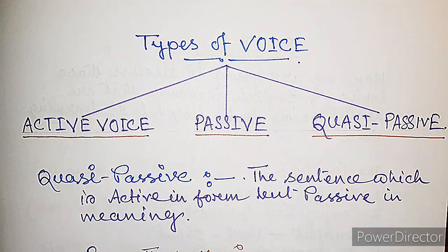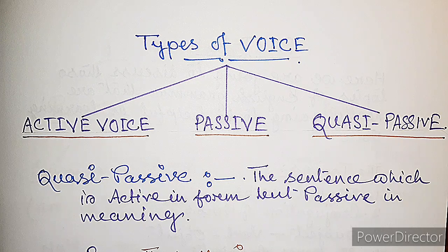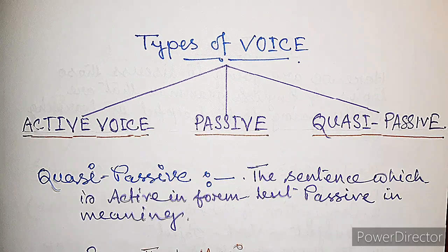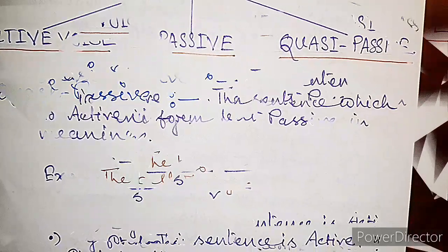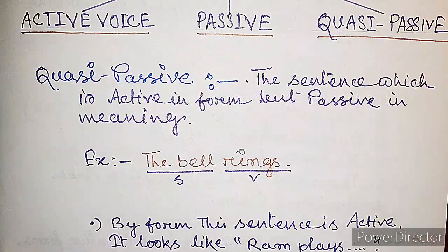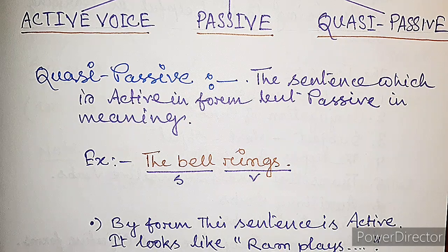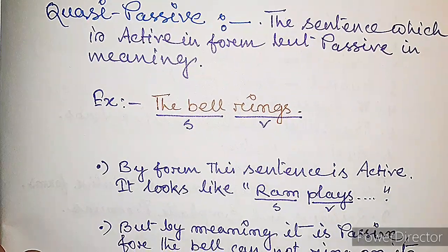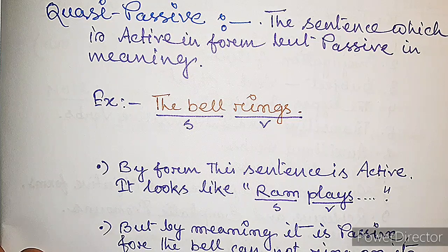Now let's have a look at the types of voice. We have learned that there are two types of voices: active and passive. And now we can see here another one called quasi-passive. A quasi-passive is a sentence which is active in form but passive in meaning or sense. Note the example: 'The bell rings.'